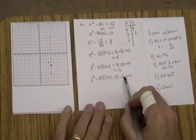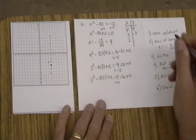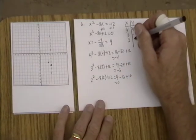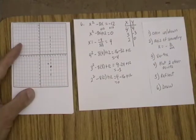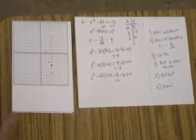Well, 4 minus 16 is negative 12. Plus 12 is going to give us 0. So when x is 2, y is 0. So there is a solution, because we've got the point on the x-axis.